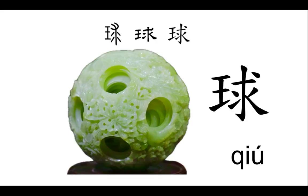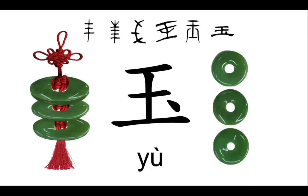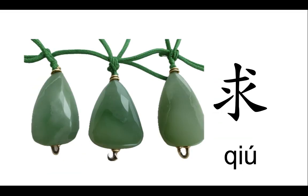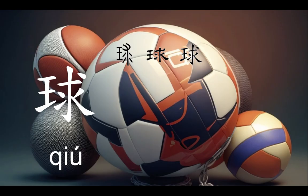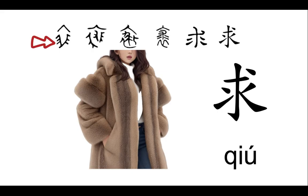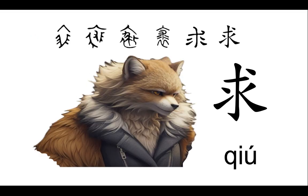The character ball was originally used for jade, so its radical is yù. The character on the right used to mean the sound of jade clinking together. Maybe because these jades were all round, qiú later came to describe ball-shaped things, and eventually sports balls in general. The qiú in qiú actually comes from an old character that looked like furry fur in Oracle Bone script — maybe that fluffy roundness also helped shape the modern meaning of qiú.